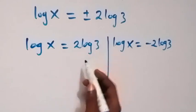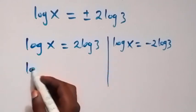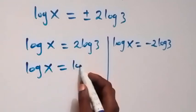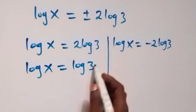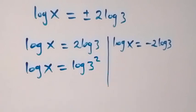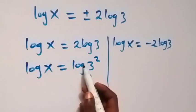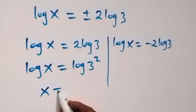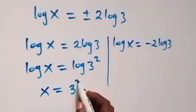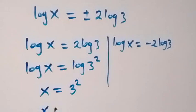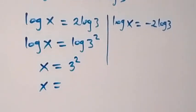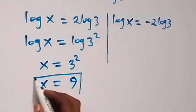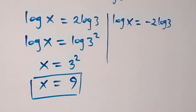The first case: log x equals 2 log 3. We can reverse the power rule to write this as log x equals log 3^2. Since the logs cancel, we have x equals 3^2, which is 3 times 3, so x equals 9.